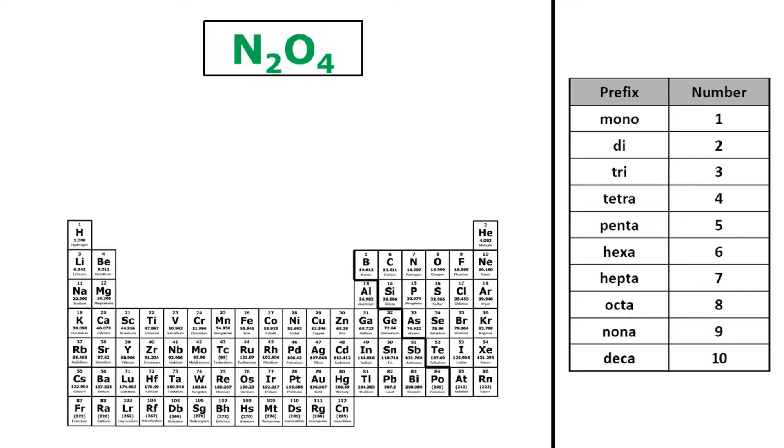So here is our first formula, N2O4, so I'm going to write the name of my first non-metal without changing it, and that is nitrogen, and then I'll write the name of my second non-metal, which is oxygen, but I'll change the ending to -ide, so this becomes oxide.